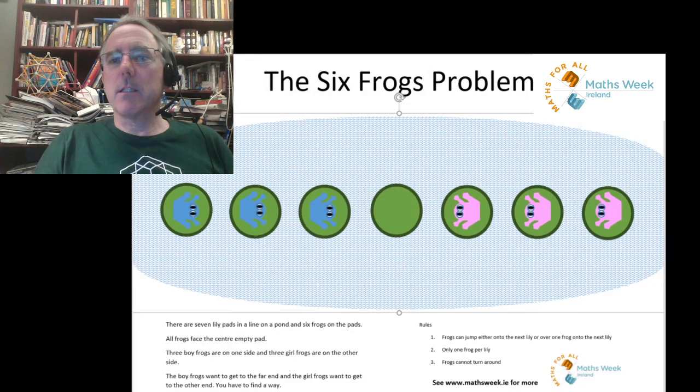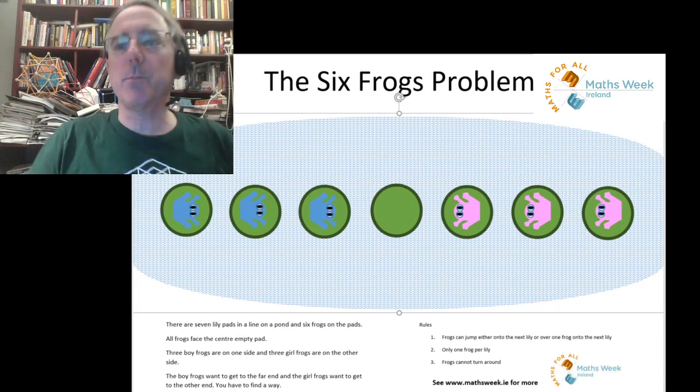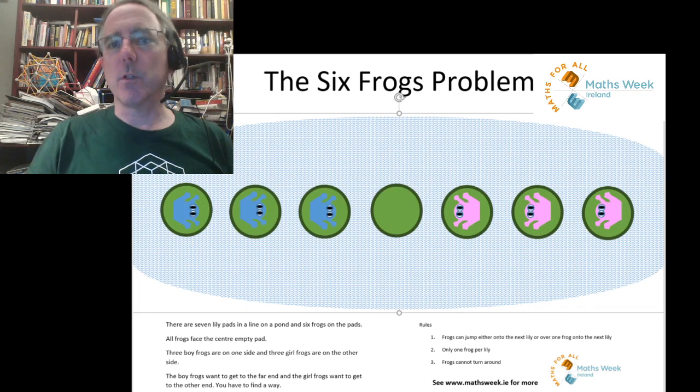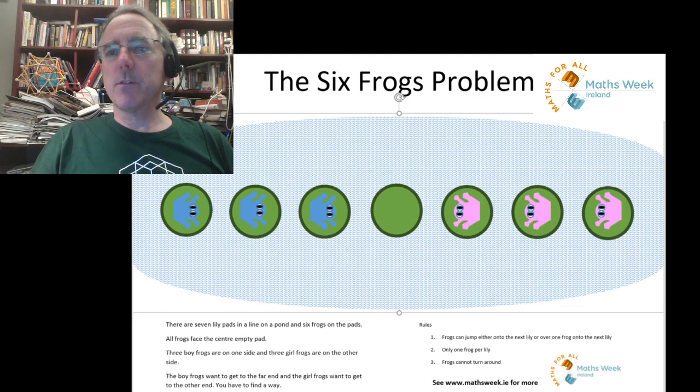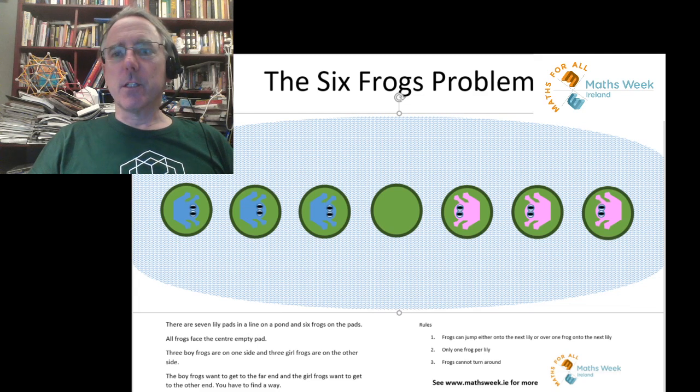So we have six frogs, and they're on seven lily pads. The lily pads are in a straight line across a pond, which is unusual enough, but these frogs also don't like to get wet. So we've three frogs on one side and three frogs on the other. We can only have one frog on a lily pad, and there are certain rules about their movement.